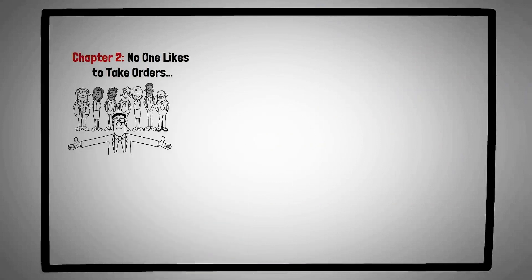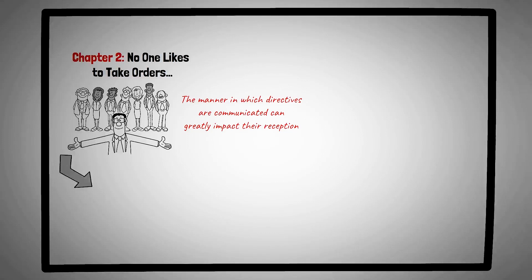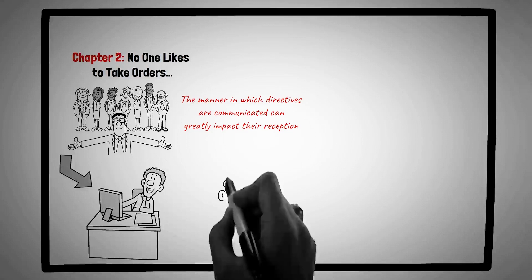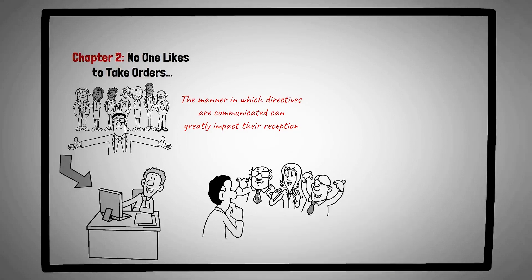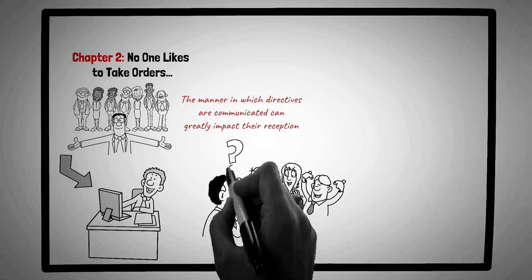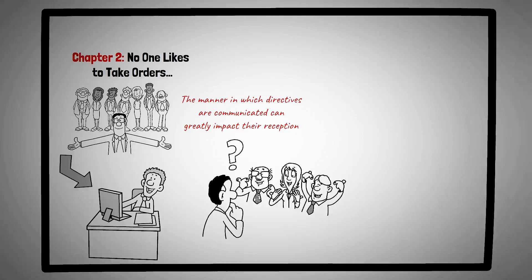Chapter two, no one likes to take orders. The dynamics of leadership and influence are complex, and the manner in which directives are communicated can greatly impact their reception. This chapter delves into this subtlety, emphasizing the power of inquiry over direct commands, fostering a sense of collaboration and ownership. Consider the story of Alex, a manager at a tech startup. He's working with a team on a tight deadline for a new software release. Instead of dictating tasks, Alex takes a different approach. In a team meeting, he outlines the project's objectives and then asks, how do you think we can best achieve this, and what role do you see yourself playing in this process? The team members, feeling empowered, begin to brainstorm and voluntarily take on tasks that align with their strengths. The project not only meets its deadline, but also boasts of high quality work, all because Alex chose to ask questions rather than give direct orders.